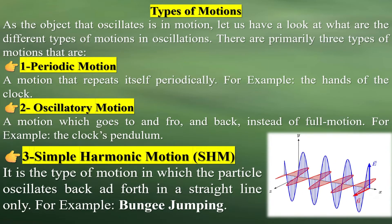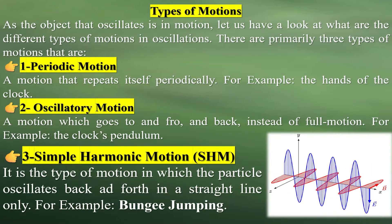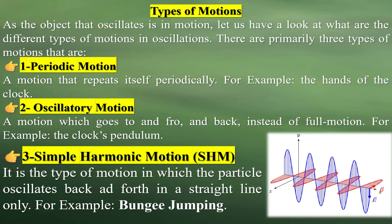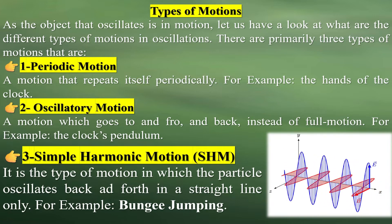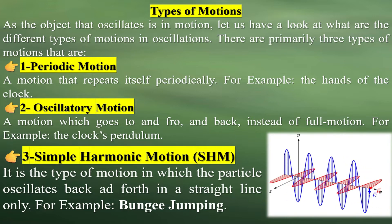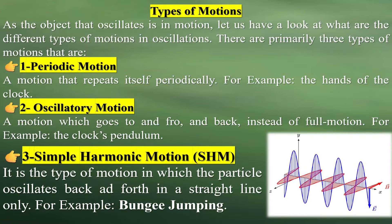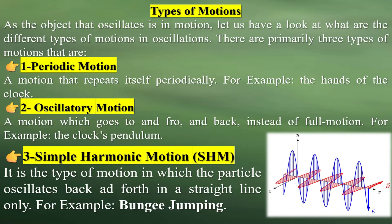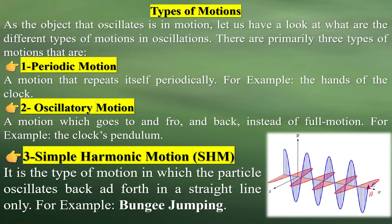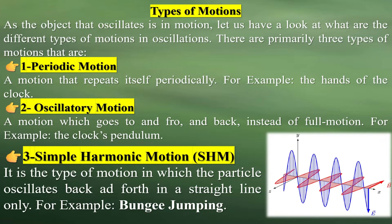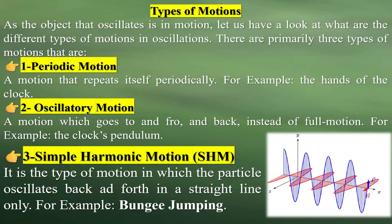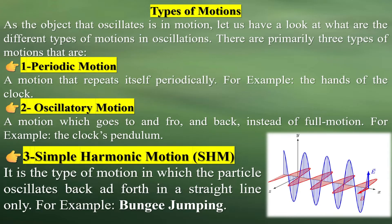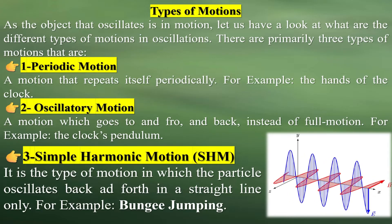Types of motions: As the object that oscillates is in motion, let us look at the different types of motions in oscillations. There are primarily three types. One: periodic motion — a motion that repeats itself periodically. For example, the hands of a clock.